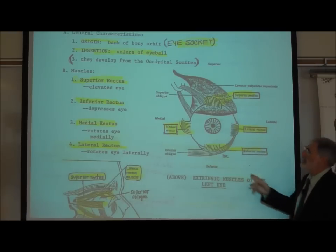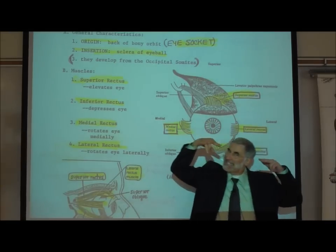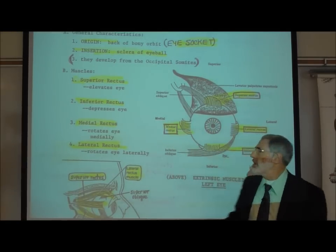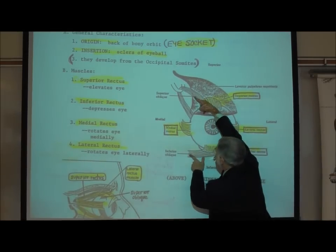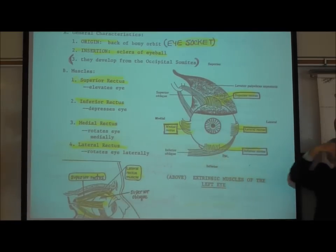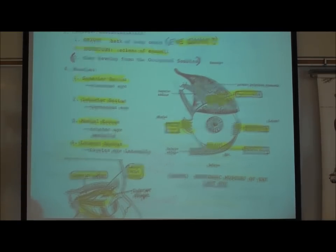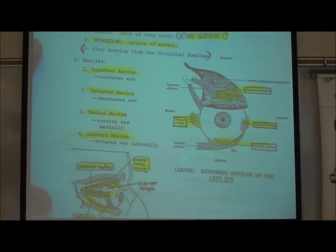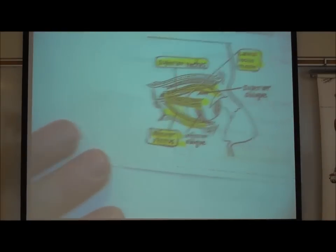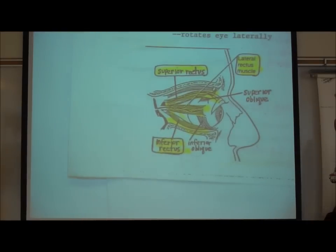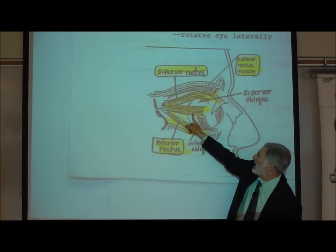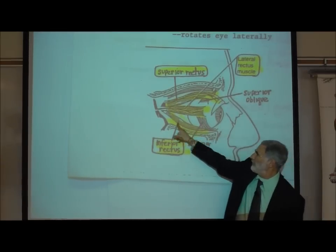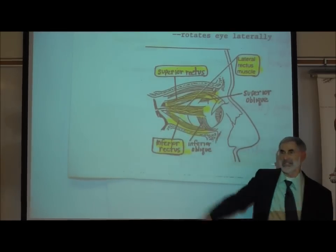In addition, there are two muscles that run at a diagonal called oblique — a superior oblique and an inferior oblique. They turn the eyeball in a diagonal or angular way. But I am not going to ask you to know these. On a side view of the eye you can see the superior rectus, the lateral rectus, and the inferior rectus.